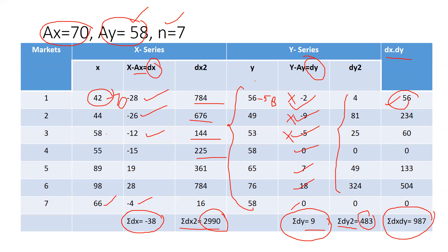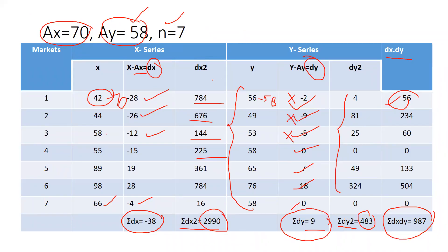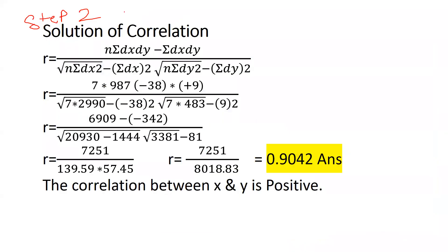I am sure that is clear so far. This was step 1 — creating the table. Now step 2: we put all the values into the Carl Pearson correlation formula. The formula is: r = (n·Σdxdy − Σdx·Σdy) divided by the square root of [n·Σdx² − (Σdx)²] times [n·Σdy² − (Σdy)²]. Here n is 7, Σdxdy is 987, Σdx is minus 38, Σdy is 9, Σdx² is 2990, and Σdy² is 483.